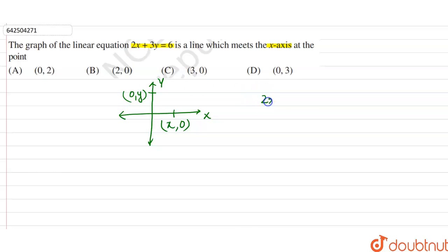Now in the given equation, 2x plus 3y is equal to 6, it is a line which meets the x-axis. Which meets the x-axis means here the y-coordinate will be equal to 0. So y-coordinate is equal to 0.